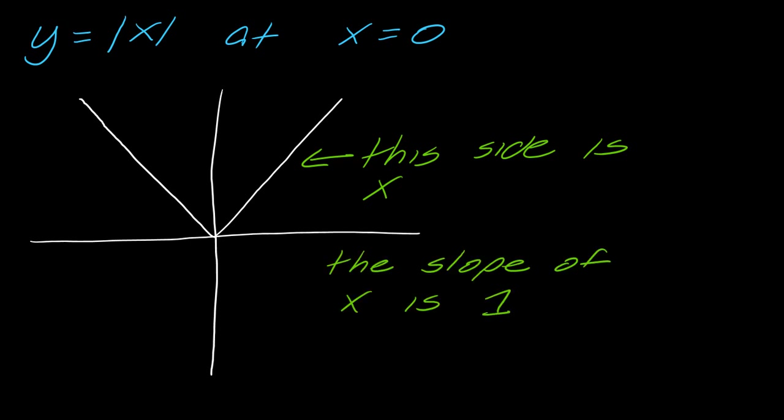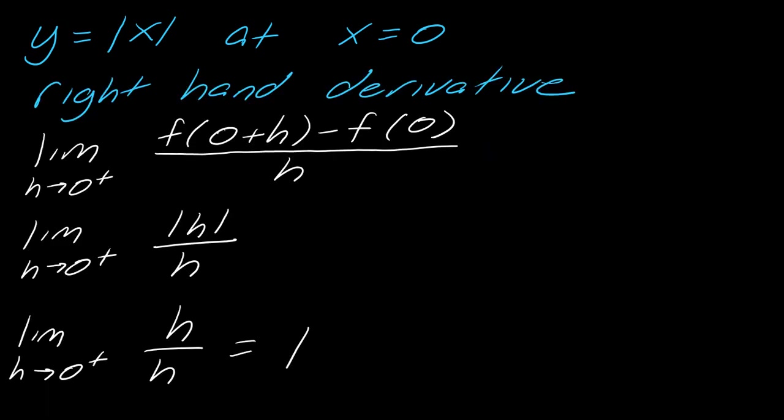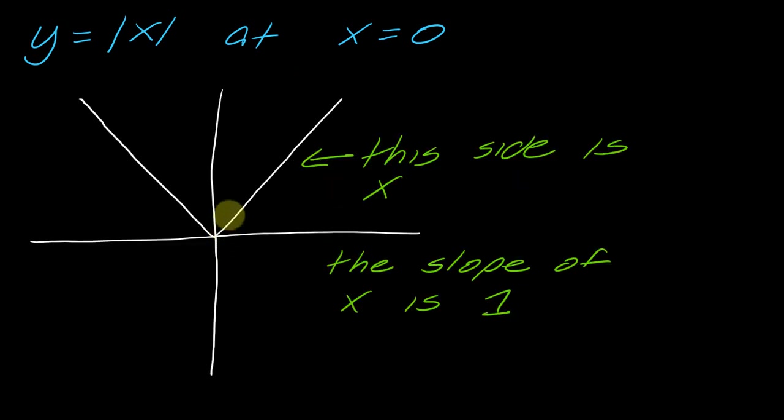So what is the slope of the line y equals x? Well, the slope is just one. And that makes sense, then, that if we found that the right-hand derivative, that the derivative here was equal to one, this is supposed to represent the slope at a point. And we actually know that the slope at this point, so this whole side has a slope of one. So on the right side, this makes sense.